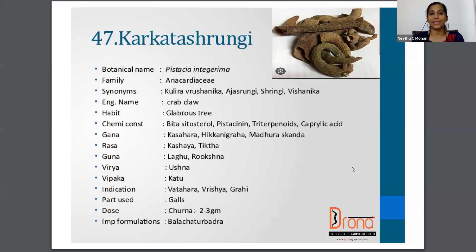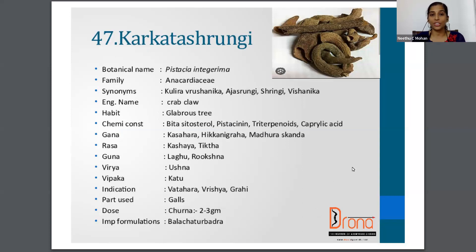The next one is Karkataka Shringi. The botanical name is Pistacia integerrima, family is Anacardiaceae. Synonyms are Ajashringa, Shringi, Vishanika, Kulira, Vrishanika, etc. The English name is Crab Claw. The part used is galls. The dosage of the Churna is 2 to 3 gram.